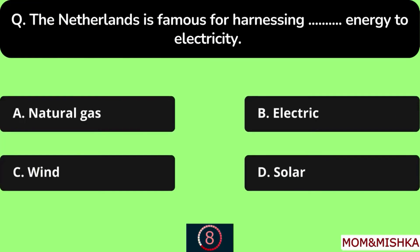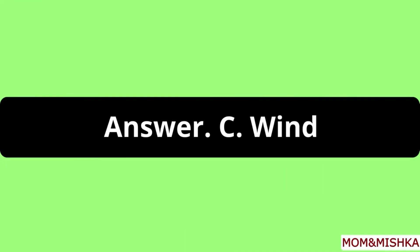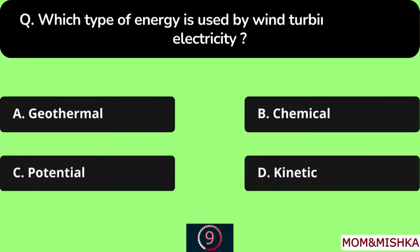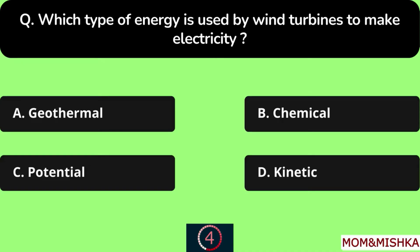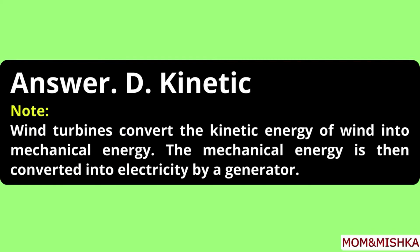The Netherlands is famous for harnessing wind energy to electricity, Option C. Which type of energy is used by wind turbines to make electricity? Kinetic energy, Option D. The wind turbines convert the kinetic energy of wind into mechanical energy, and then the mechanical energy is converted into electricity by a generator.